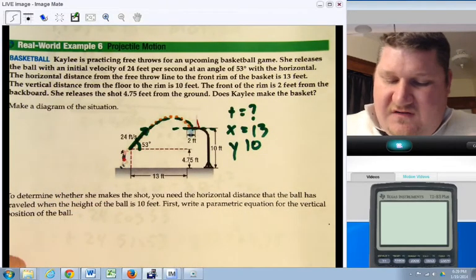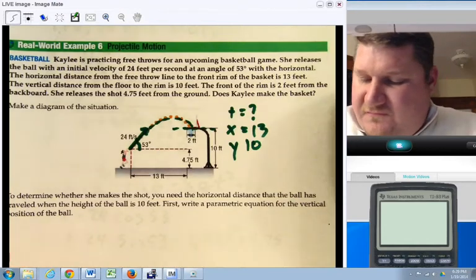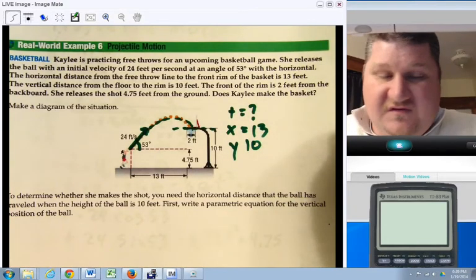To determine whether she makes a shot, you need the horizontal distance the ball has traveled. The height of the ball is 10 feet. First, write parametric equations for the vertical position of the ball.